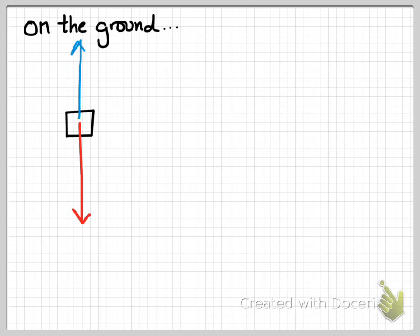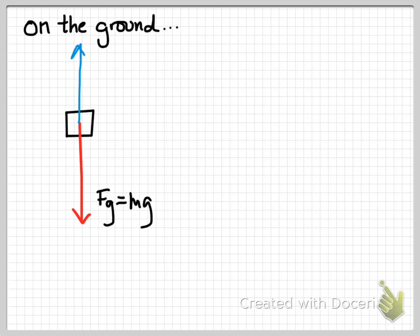That's a free-body diagram — ideally the arrows should meet at the center; my drawing is a little bit sloppy here with Doceri. If something is sitting on the ground, on the Earth — and we're going to assume everything we're talking about here is on the Earth — there is a force downward on it. What is that force? Force of gravity, F sub G. The force of gravity is always equal to your mass times gravity, no exceptions. It is equal to the mass of the object times gravity.